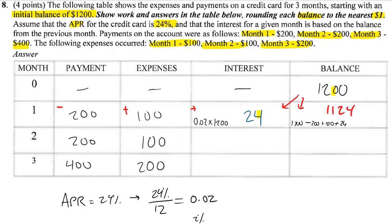In the same way, we're going to take 2% of 1,124. When I run that calculation, I get 22.48 when I round. So here, it's 1,124 minus 200 plus 100 plus 22.48, and overall that gives me 1,046.48.